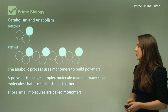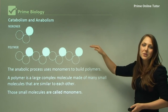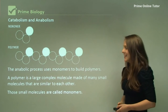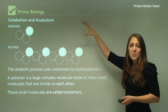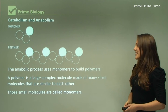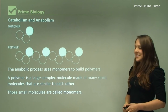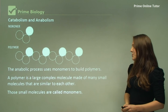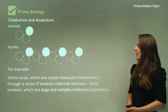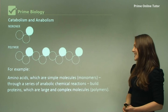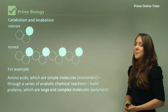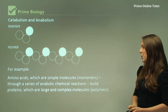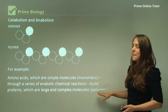The anabolic processes use monomers to build polymers. Mono means one and poly means many, so that would make sense — monomers build up polymers. A polymer is a large complex molecule made of many small similar molecules called monomers. For example, amino acids, which are simple molecules (monomers), through a series of anabolic chemical reactions build up proteins, which are large and complex molecules (polymers).